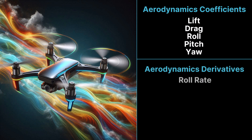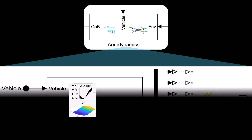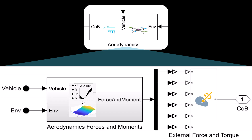They also include dynamic derivatives like roll rate, pitch rate, and yaw rate, which influence the vehicle's stability and response. In Simulink, aerodynamic behavior is typically modeled using lookup tables, which map aerodynamic coefficients to variables such as airspeed and body rates. Overall, we use multiple lookup tables to simulate total lift and drag forces and moments, incorporating the effects of airspeed, wind disturbances, and gusts. These forces and moments are then transformed to a specific reference point, typically the center of the quadcopter body, and applied to the model using the external force and torque block.